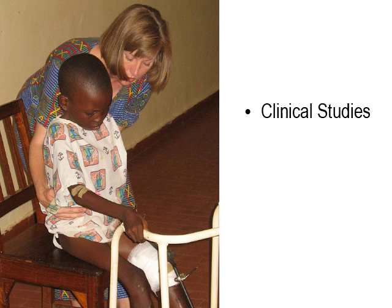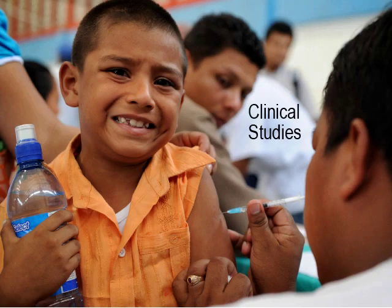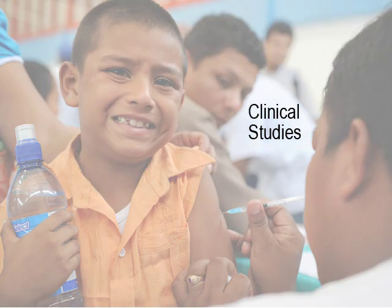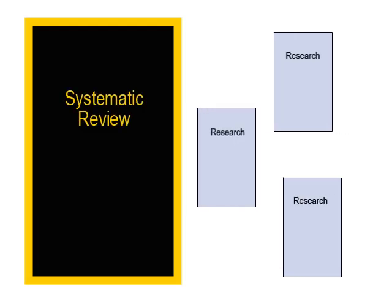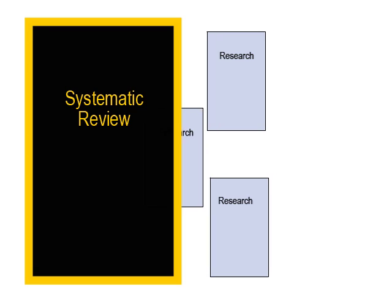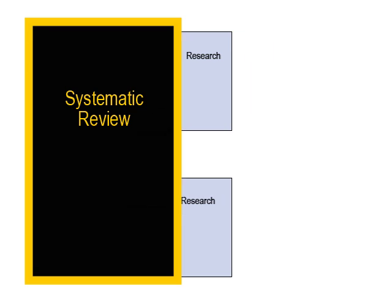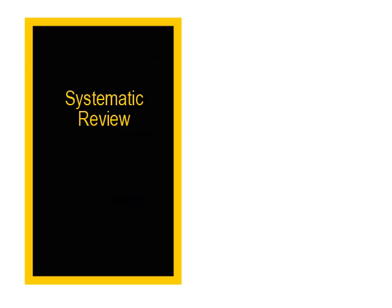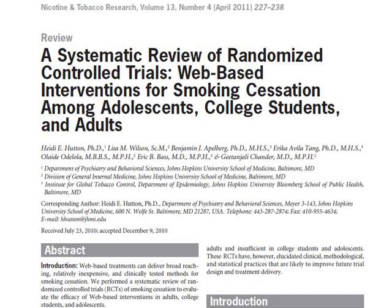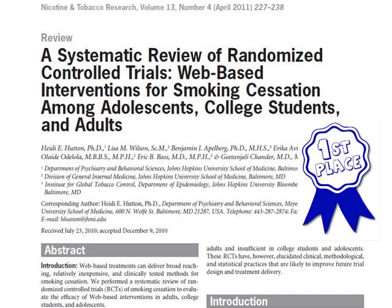Clinical studies and systematic reviews. A clinical study tests the effectiveness of a treatment or drug. A systematic review pulls together the current research done on a specific health-related topic and critiques it. If you can find a systematic review on your subject, you've discovered a superior source of information.